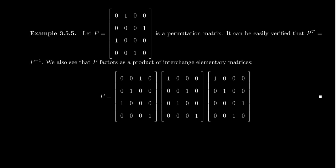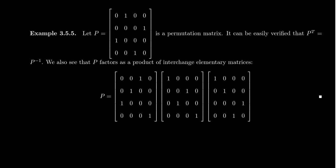Here is an example of such a matrix. Take this 4×4 permutation matrix: the first row is [0, 1, 0, 0], the second row is [0, 0, 0, 1], the third row is [1, 0, 0, 0], and the fourth row is [0, 0, 1, 0].